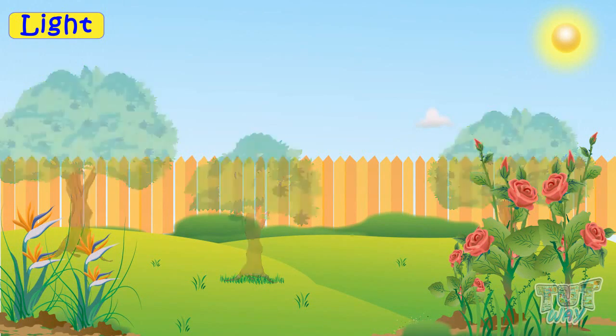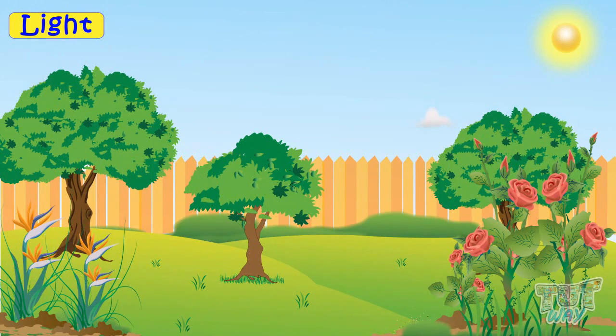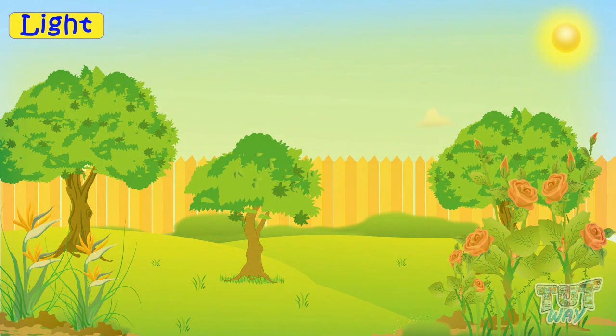Here is a park. We can see different plants, trees, flowers because light from the sun is falling on these things.